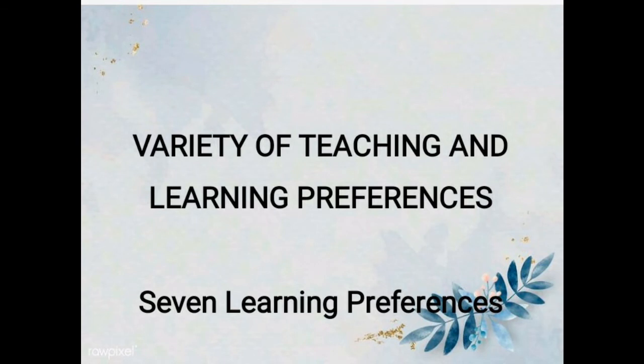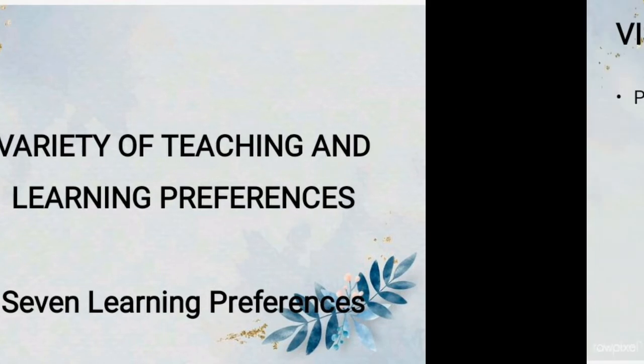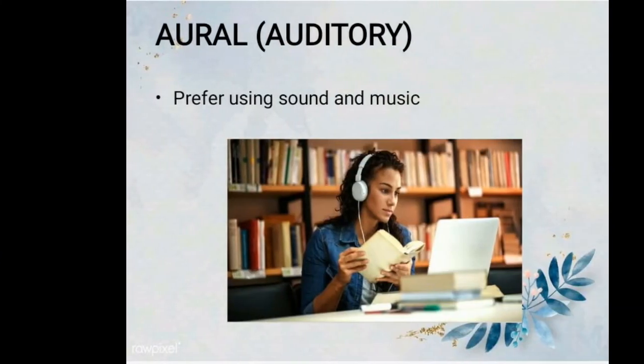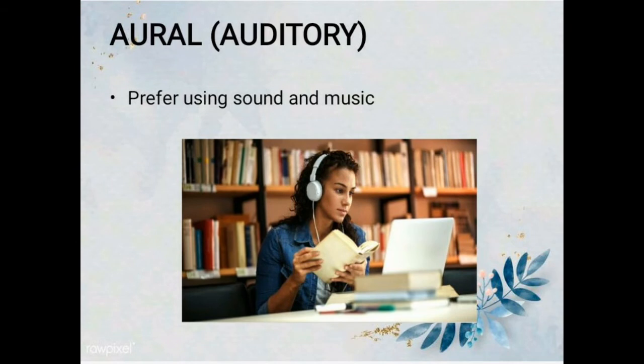There are seven learning styles representing a variety of teaching and learning preferences. Number one: visual or spatial — you prefer using pictures, images, and spatial understanding. Number two: oral or auditory — you prefer using sound and music.